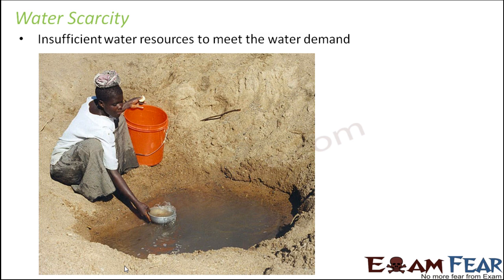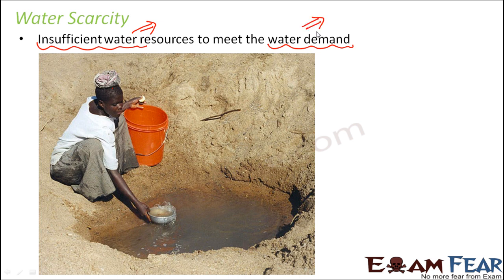Water scarcity can be defined as insufficient water resources to meet the water demand. That means the amount of water available is not enough to meet the demand. This would be either because there is a lack of water sources, or because the water demand is too high.